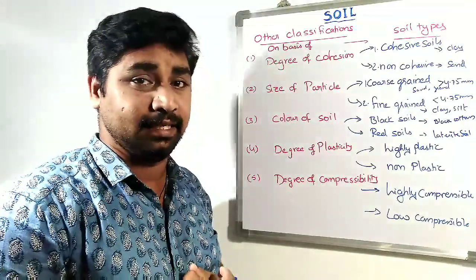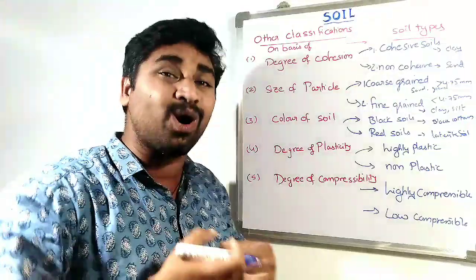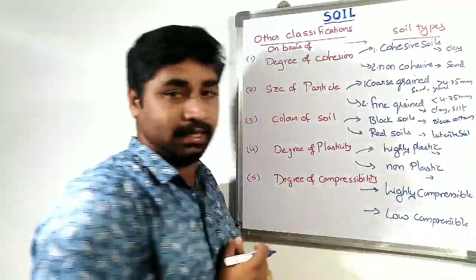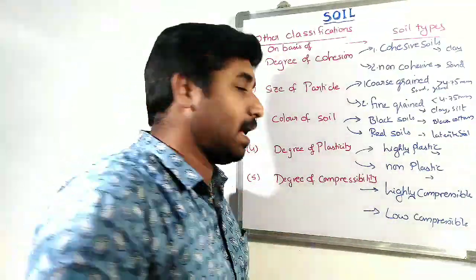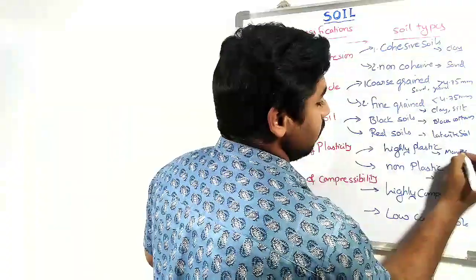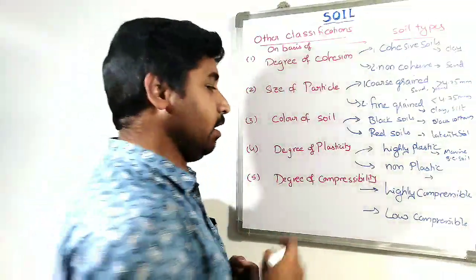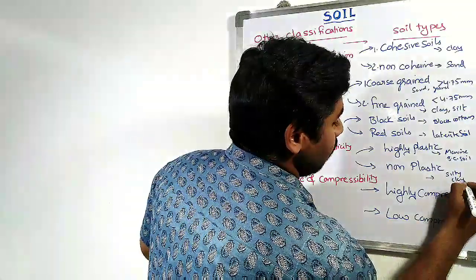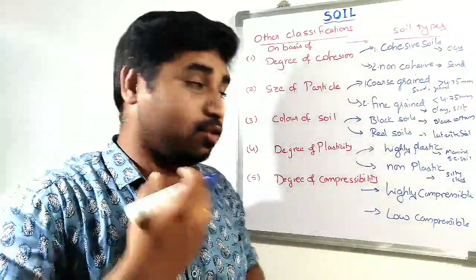Next, classification based on degree of plasticity — that is, the plastic nature exhibited when the soil comes in contact with water. We can classify it into highly plastic clay or non-plastic clay. If the plastic nature is high when water is added, it is referred to as highly plastic clay — examples include clay soils, marine soils, and black cotton soils. Non-plastic clays include silty clay or silty sand, which have less plastic nature.